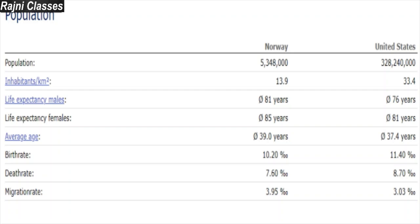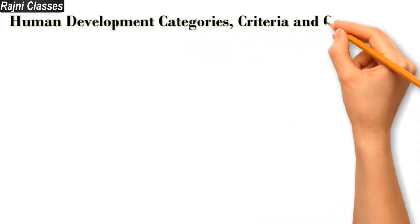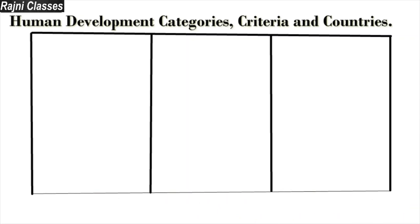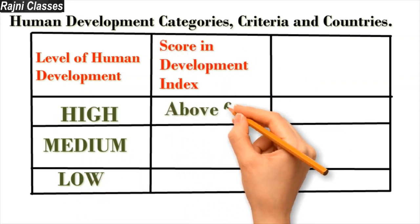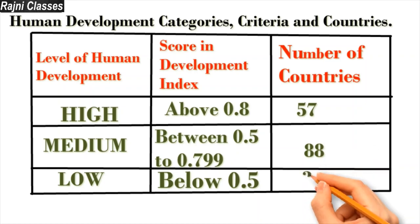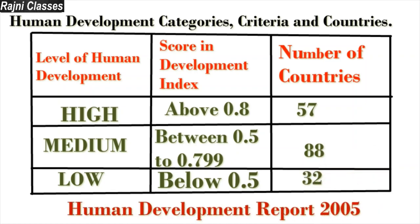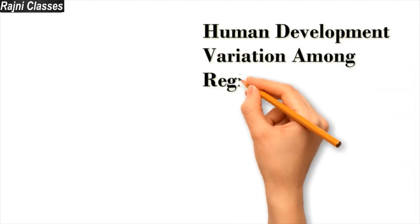The UNDP measures the Human Development Index across 189 countries, showing the level of human development as high, medium, or low. Countries with a score above 0.8 are termed as having a high index value. Countries with a score between 0.5 and 0.799 are placed at a medium level of development, and countries with a development index below 0.5 are said to have a low level of human development.